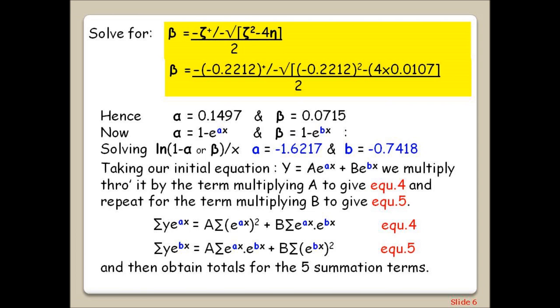Then taking our initial equation y equals AE to the AX plus BE to the BX, we multiply through it by the term multiplying A to give equation 4, and repeat for the term multiplying B to give equation 5. And then obtain totals for the 5 summation sets by feeding the x values from our data set into the equations.